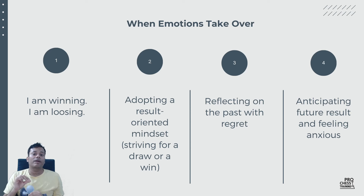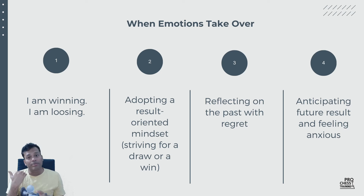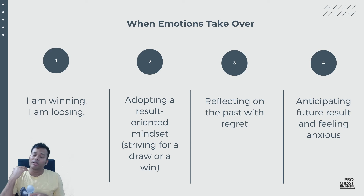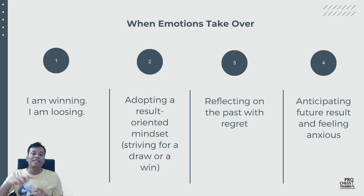Then, reflecting on the past with regret. It is possible you had a great position, made a mistake, and now you have to play for a draw. You need to make peace with your past so you can focus on your present. It could also be that you lost the previous game and are not in the mood to play. There is no connection between the position and the past. Similarly, anticipating the future result and feeling anxious — thinking too much about what will happen next.